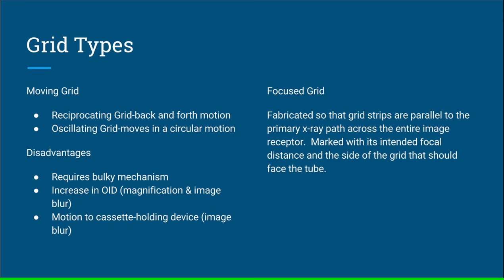There are two types of moving grids: the reciprocating grid moves back and forth, and the oscillating grid moves in a circular motion. Disadvantages of these moving grids include a bulky mechanism, increased OID, and motion to the cassette holding device. Focused grids are fabricated so that the grid strips are parallel to the x-ray path across the entire image receptor. It is marked with its intended focal distance on the side of the grid that should face the tube. Misalignment can result in off-level, off-center, off-focus, upside down, or off-center off-focus errors.